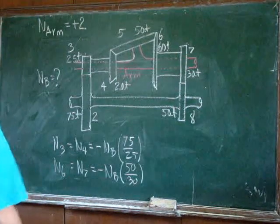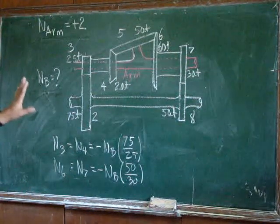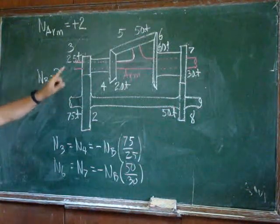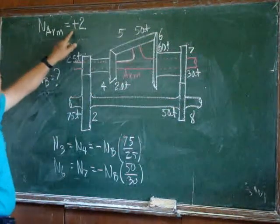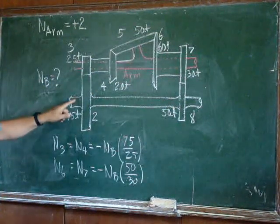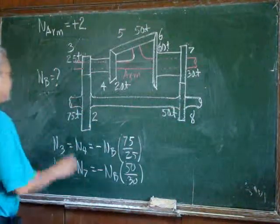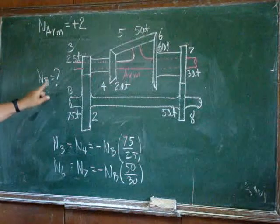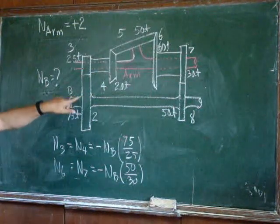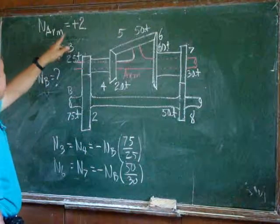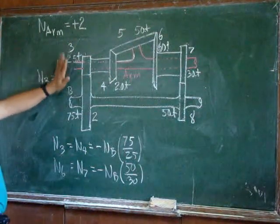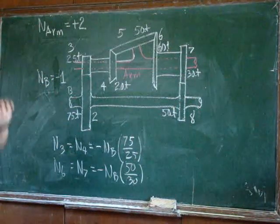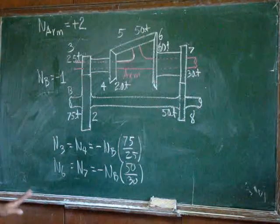In this particular problem, we have an epicyclic gear train and this arm rotates two times due to the rotation of shaft B. We have to determine the rotation of shaft B that results in the arm rotating two times. The answer is negative one, but we'll have to derive it.